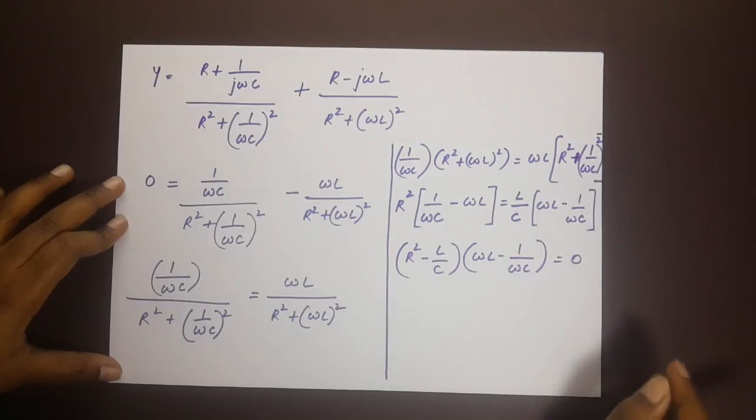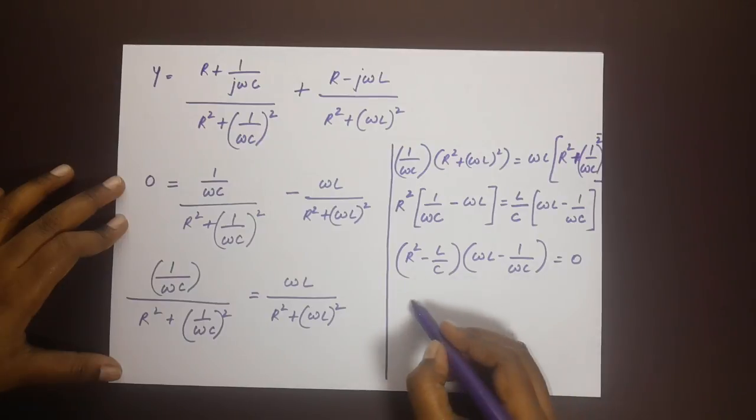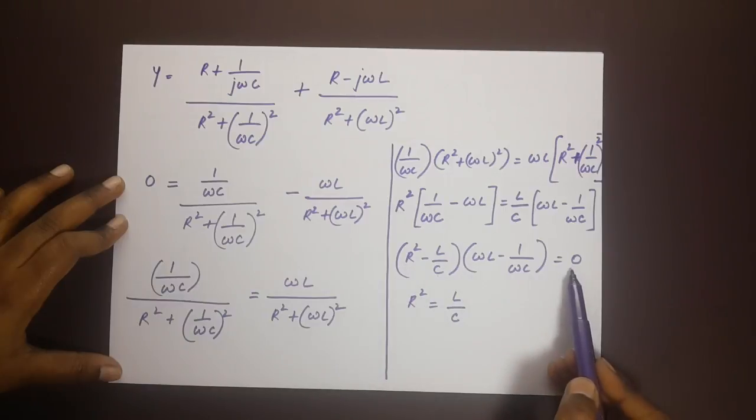For the condition given in the question, R square should be equal to L by c. R square minus L by c is equal to zero, that gives us R square is equal to L by c, and that gives us R equals root of L by c.